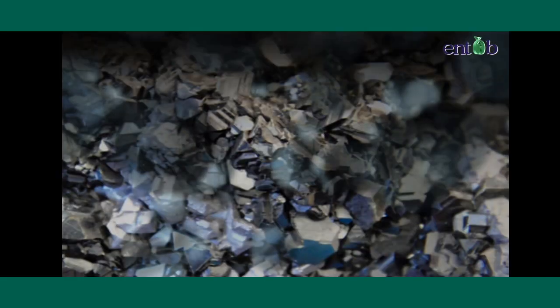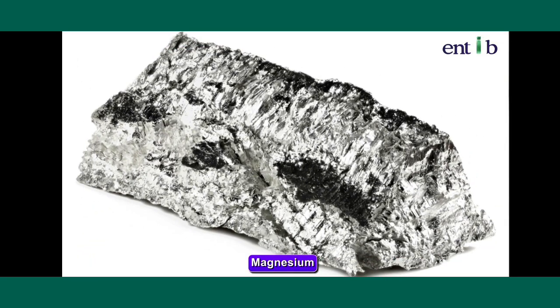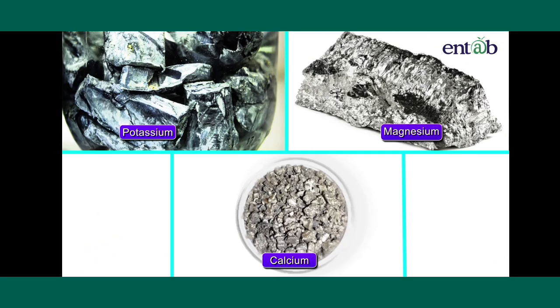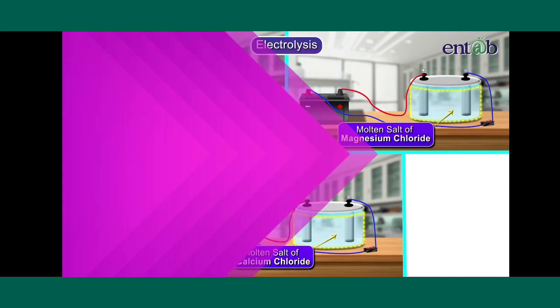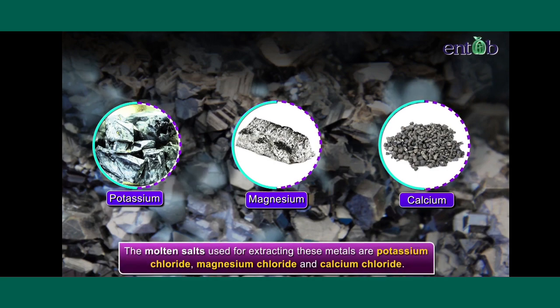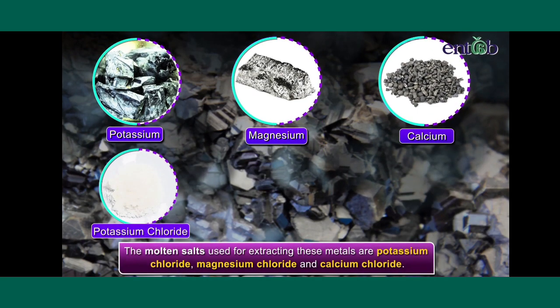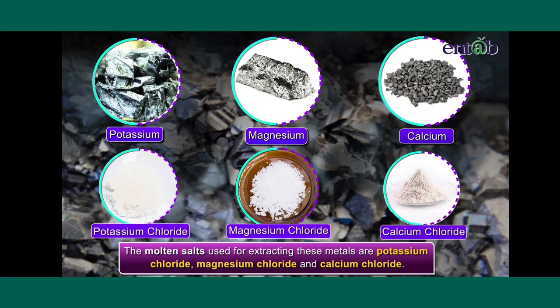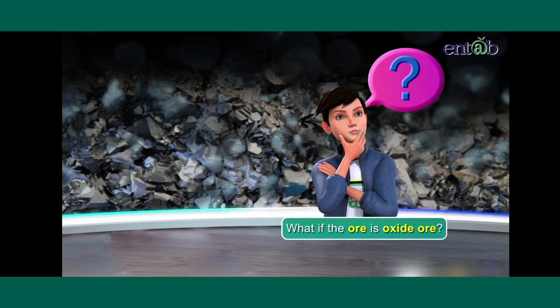As mentioned earlier, potassium, magnesium and calcium are also extracted by the process of electrolysis from their respective chloride salts. The molten salts used for extracting these metals are potassium chloride, magnesium chloride and calcium chloride respectively. What if the ore is oxide ore?